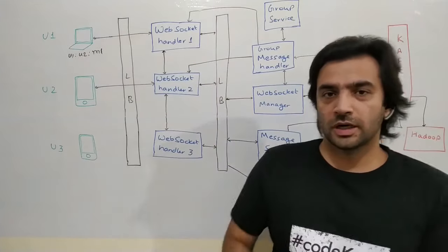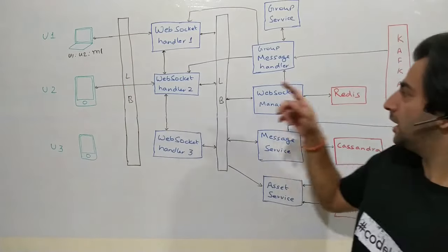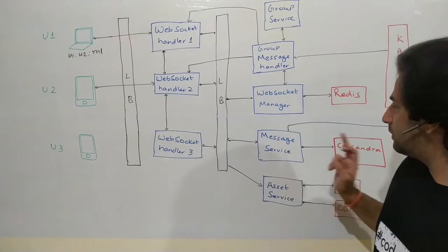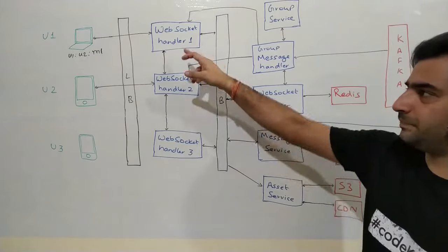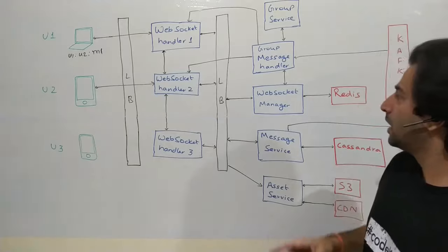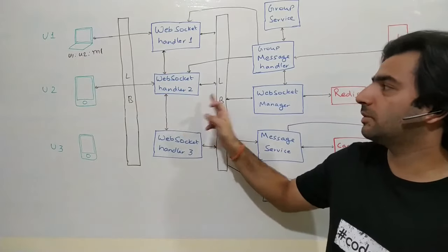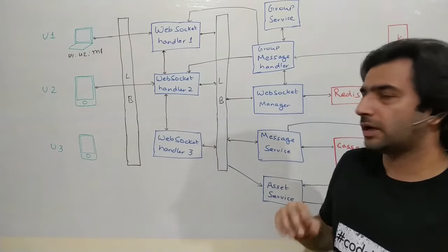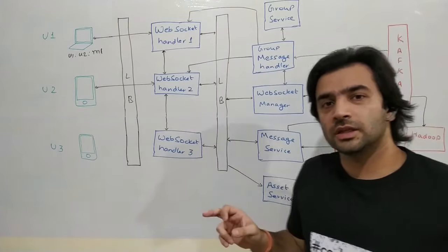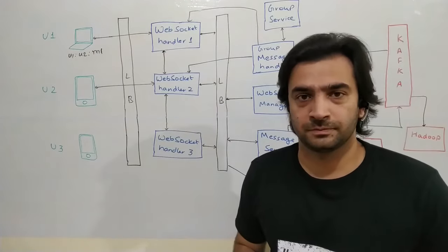Coming back to the flow: WebSocket Handler 1 receives the message to send M1 to user2. It talks to both the Message Service and WebSocket Manager in parallel. Message Service saves the message into Cassandra and returns message ID M1. WebSocket Manager tells WebSocket Handler 1 that user U2 is connected to WebSocket Handler 2. WebSocket Handler 1 then tells WebSocket Handler 2: I have a message for U2, I believe he's connected to you — go send him that message.